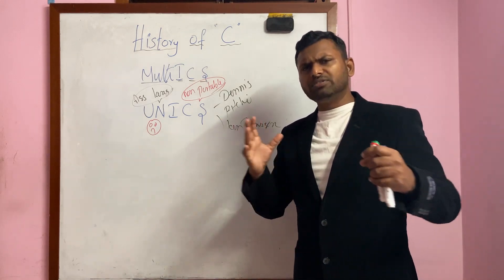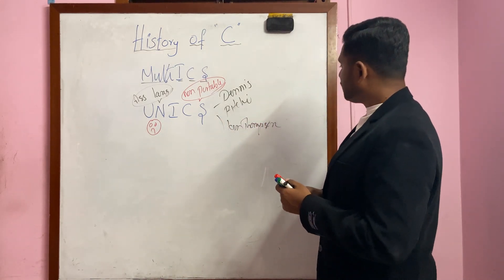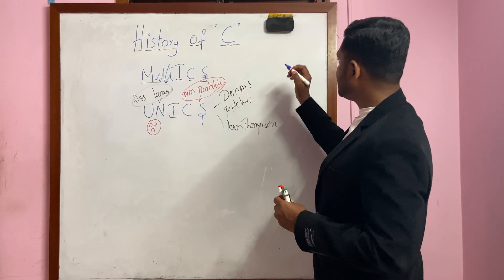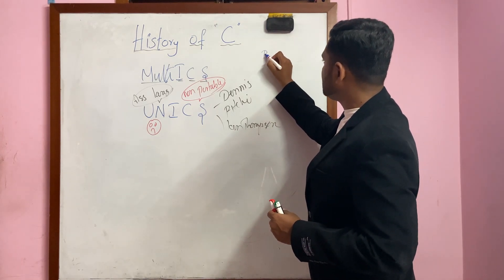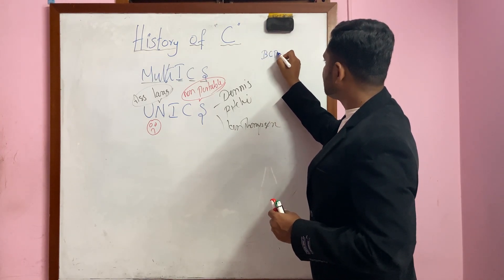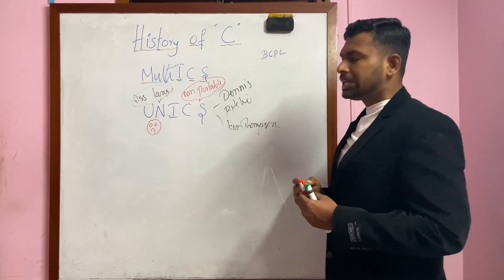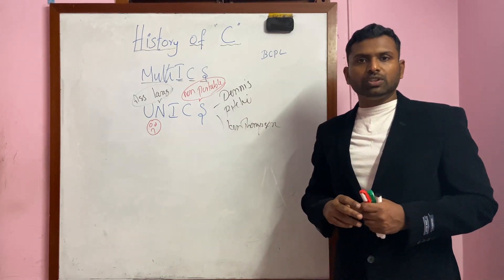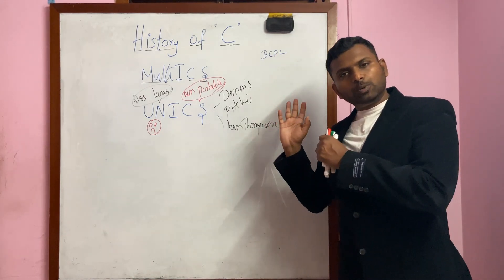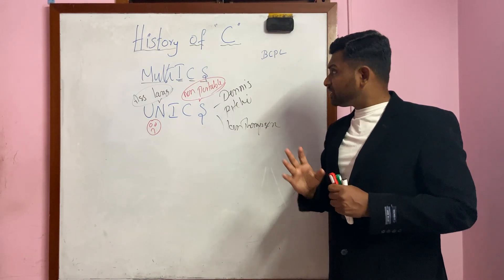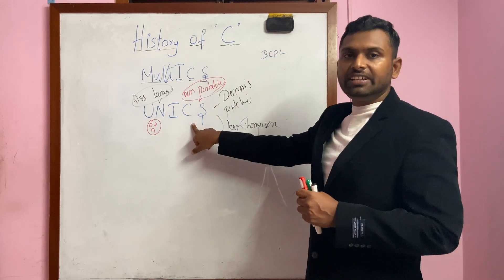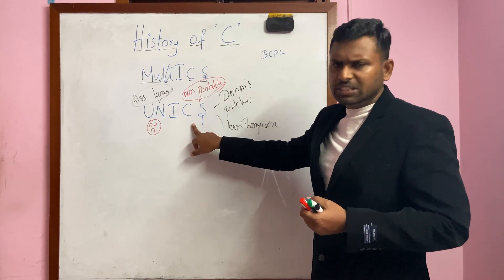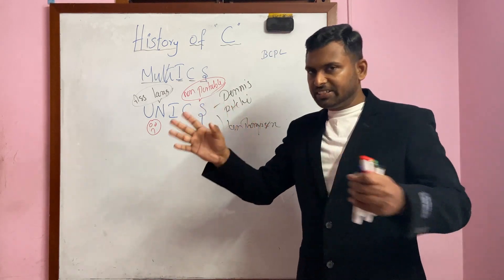After a long search, they found an already existing programming language called BCPL — Basic Combined Programming Language. With this programming language, they tried to redesign the operating system UNIX, but they miserably failed. It didn't work out.